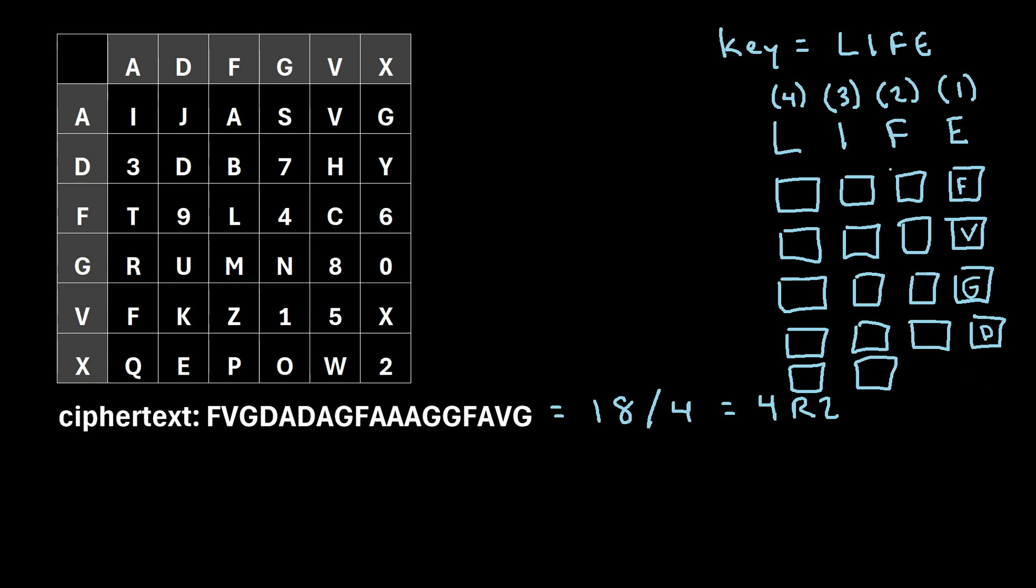So that means we need to move on to column two. So column two we identified as this column right here. So we'll just pick up where we left off. So next we'll write an A, and then D, and then A, and then G. And we'll fill in the rest of the keyword grid in this manner.